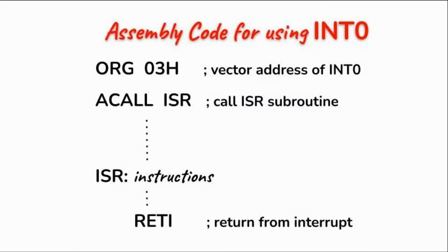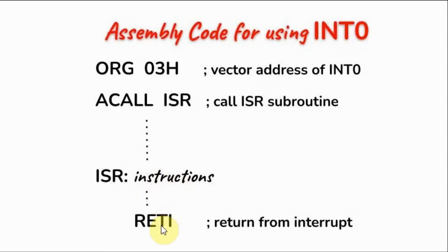The assembly code needed for using interrupt 0 starts with the origin directive where we define the vector address of interrupt 0. Then we have the absolute call, which is executed whenever there is an interrupt signal at pin 12. The program jumps to the ISR label where the interrupt service routine is executed, and the subroutine must be terminated with the return-from-interrupt instruction, after which the program returns to the statement immediately after the absolute call.